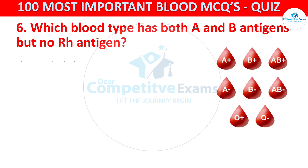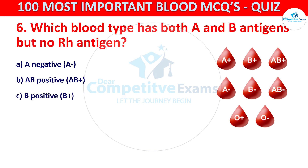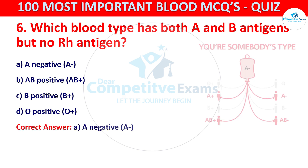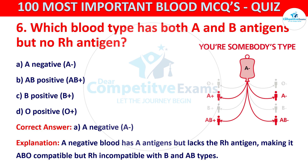The correct answer is A, that is A negative. A negative blood has A antigens but lacks the Rh antigen, making it ABO compatible but Rh incompatible with B and AB types. Question number seven: